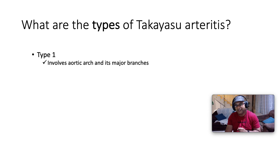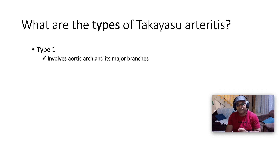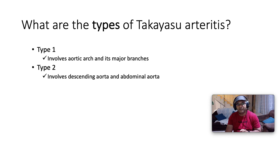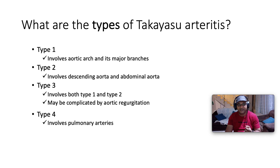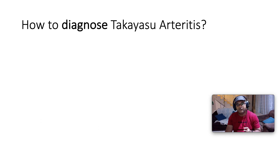There are four types of Takayasu arthritis. Type 1 involves the aortic arch and its major branches. Type 2 involves the descending aorta and the abdominal aorta. Type 3 involves both types 1 and 2 and may be complicated by aortic regurgitation. Type 4 involves the pulmonary arteries.